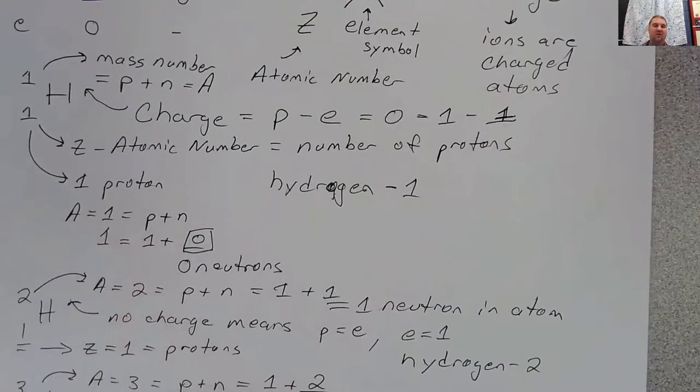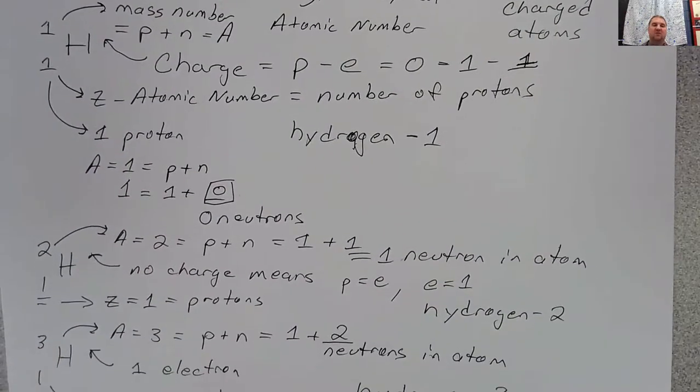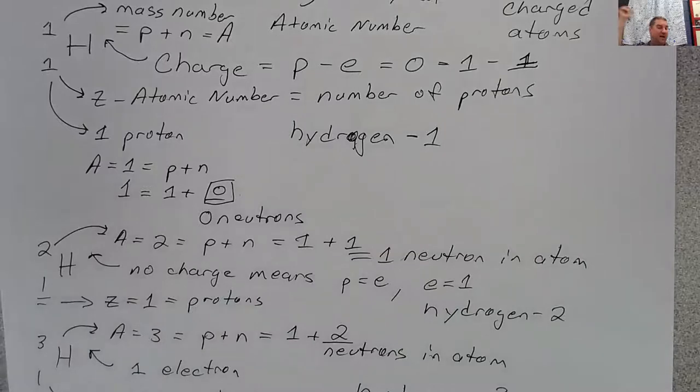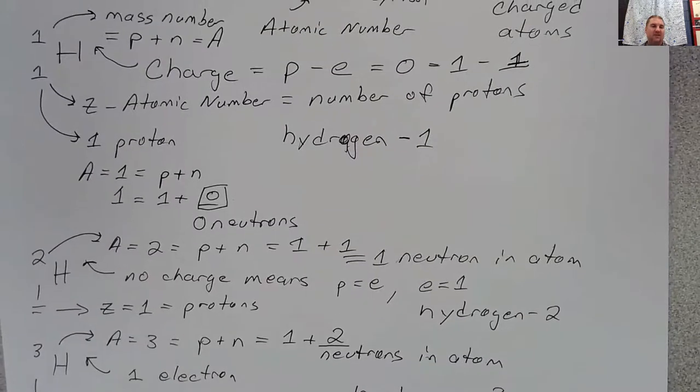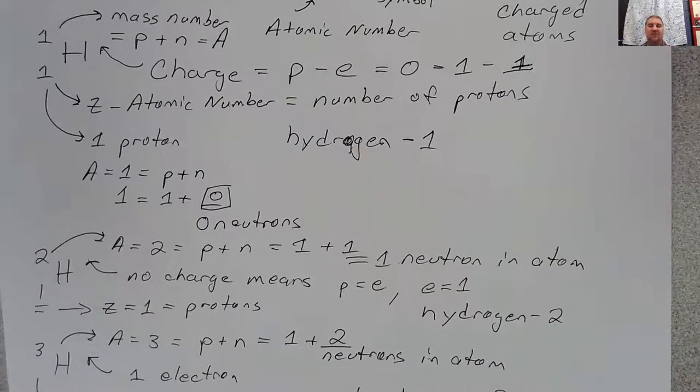So in the prior video, atomic symbols, were there any atomic symbols for nuclides that had the same number of protons, but different numbers of neutrons? And you should be saying, yeah, there were these hydrogen ones. So hydrogen one, hydrogen two, hydrogen three, these are all isotopes of hydrogen.